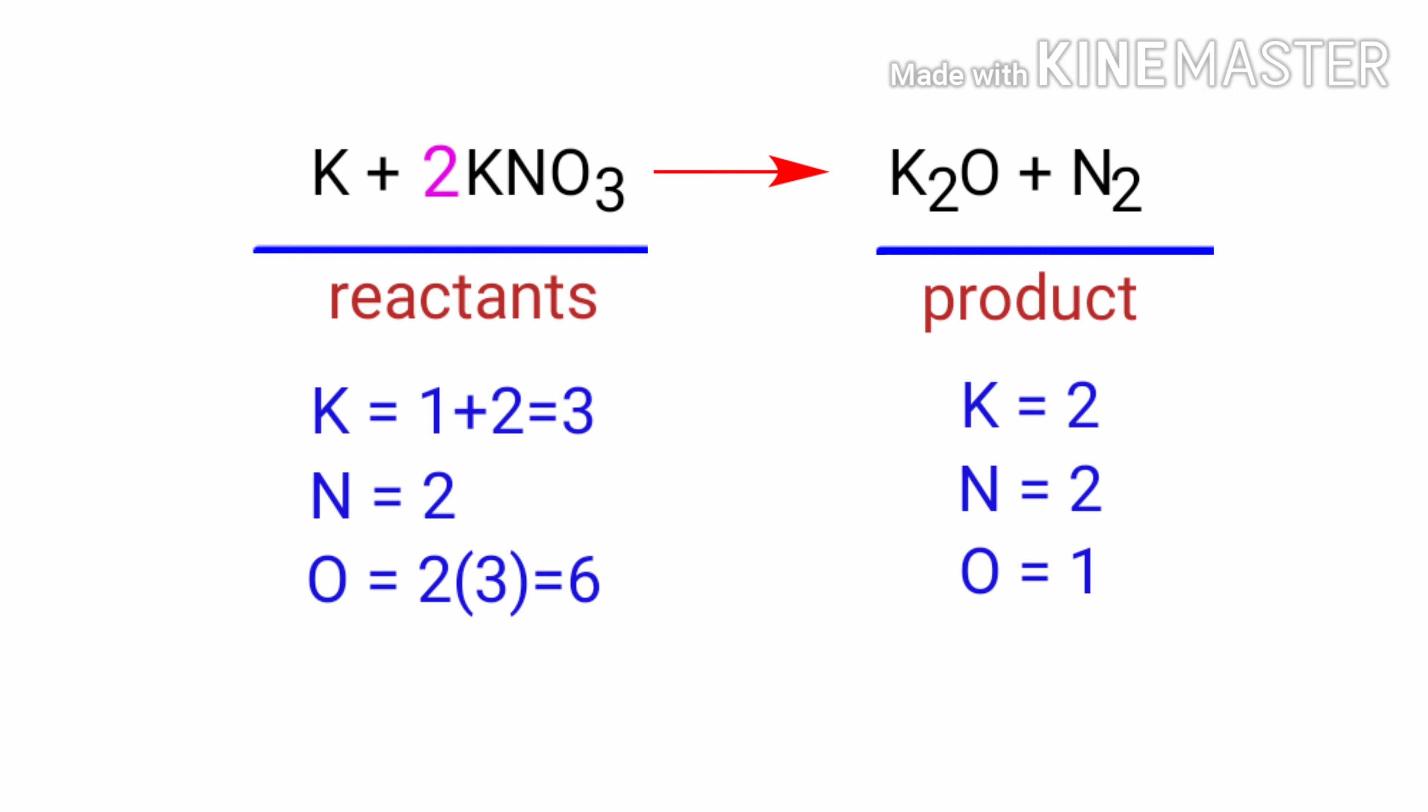Now we need to balance the oxygen atoms. To do this, we need to put a coefficient of 6 in front of K2O. The oxygen atoms are balanced.